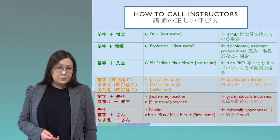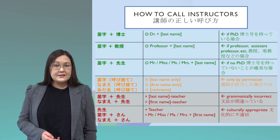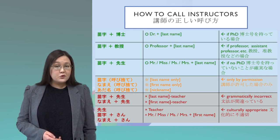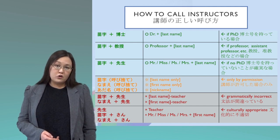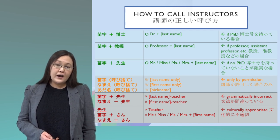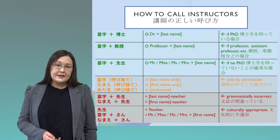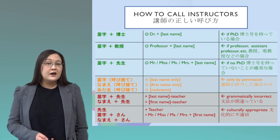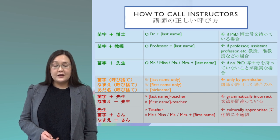If the instructor has a PhD, then please use 'Doctor' plus last name. This is the most standard, formal, polite, appropriate, and correct way to address any instructor who has earned a doctorate. Also polite and formal is 'Professor' plus last name — this is for any professor or associate professor in a university.